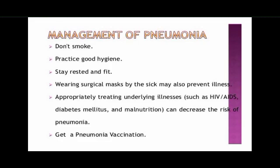Preventing pneumonia in children is an essential component of a strategy to reduce child mortality. Immunization against pneumococcus, measles, and pertussis is the most effective way to prevent pneumonia. Adequate nutrition is key to improving a child's natural defense mechanism, starting with exclusive breastfeeding for the first six months of life, which also helps reduce the length of illness if a child does become ill.